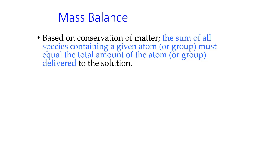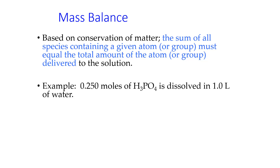First, let's talk about how to do a mass balance. A mass balance is based on the idea of conservation of matter, which says that the sum of all species containing a given atom must equal the total amount of that atom delivered to the solution. For example, if we dissolve some phosphoric acid in water, we can do a mass balance for the phosphate ion.